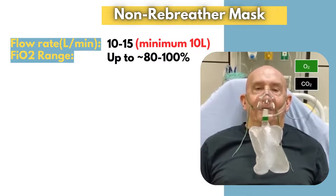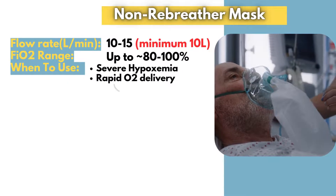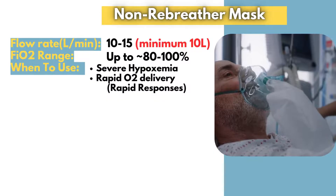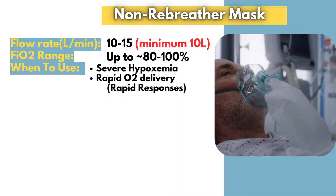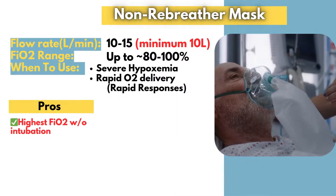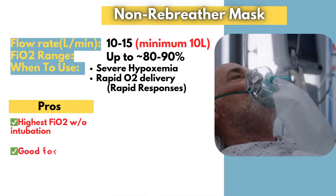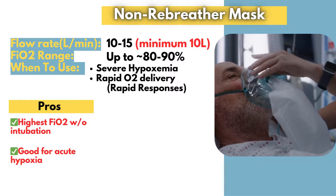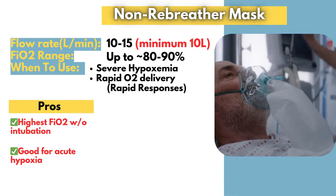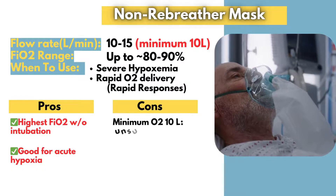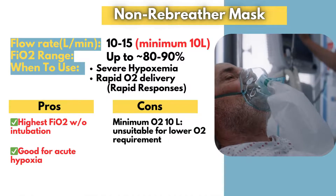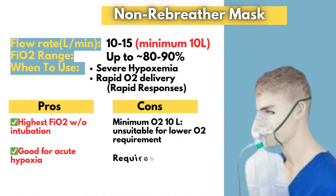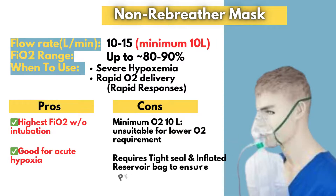The non-rebreather mask is designed for critical situations requiring a high concentration of oxygen quickly. It is commonly used in acute respiratory distress, severe hypoxia, trauma, shock, or other life-threatening conditions where the patient is still breathing but requires maximum oxygen support, making it a go-to device in rapid response and emergency settings. Despite its effectiveness, the non-rebreather mask is not a long-term solution. It cannot deliver less than 10 liters per minute, making it unsuitable for patients with lower oxygen requirements. Additionally, it requires a tight seal around the face to prevent air leakage, which may cause discomfort for some patients.